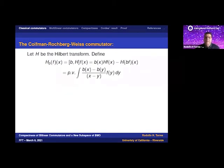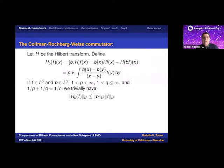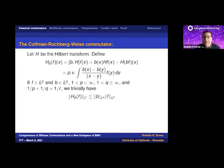Since the Hilbert transform maps Lp into Lp for p between one and infinity, it's easy to see that each term of the commutator maps Lr into Lr where the indices satisfy Hölder's relation. So you're not exploiting the cancellation at all — each term is as good as the difference. However, one can explore that cancellation to obtain something better.